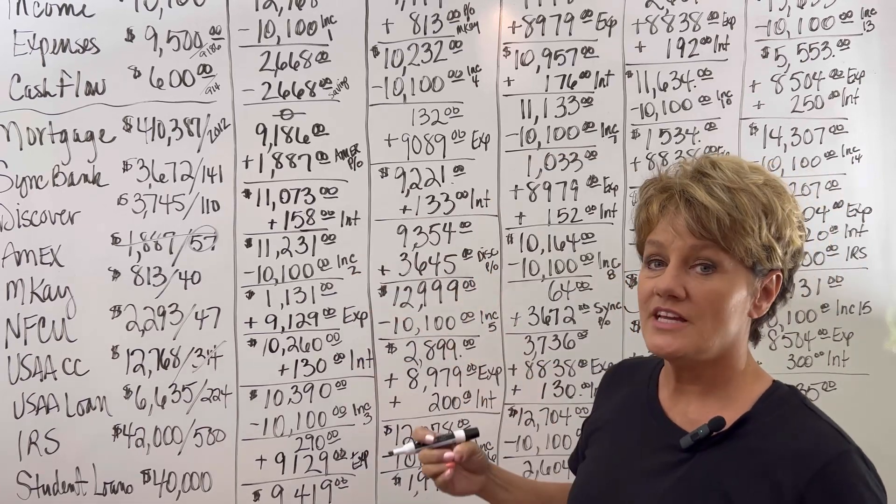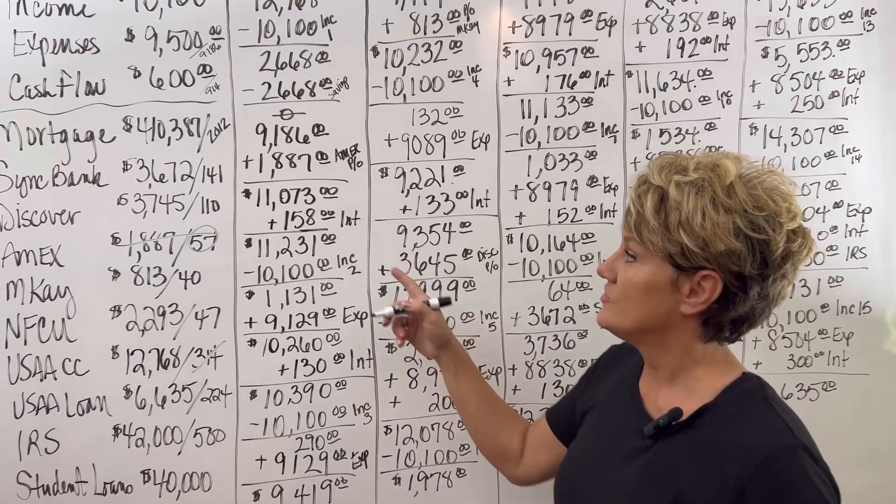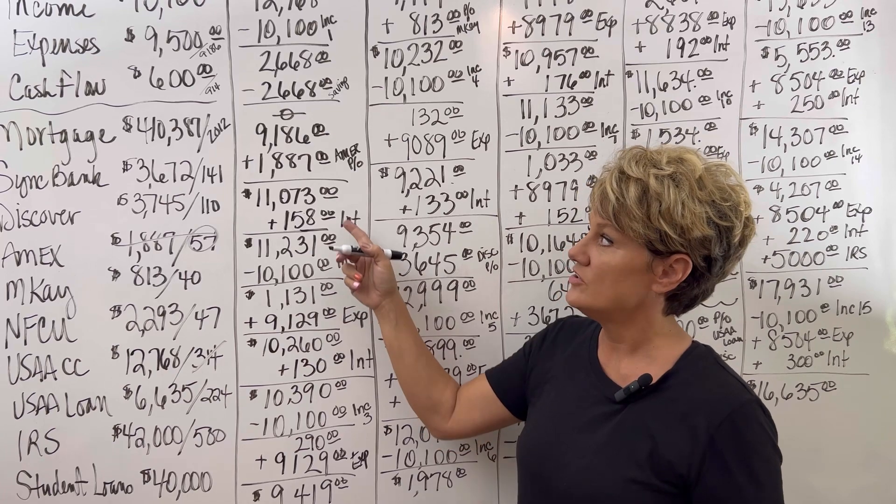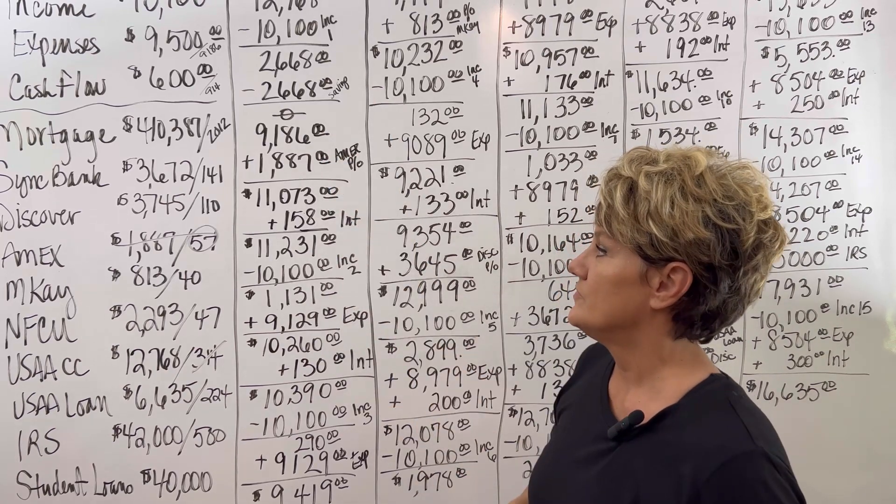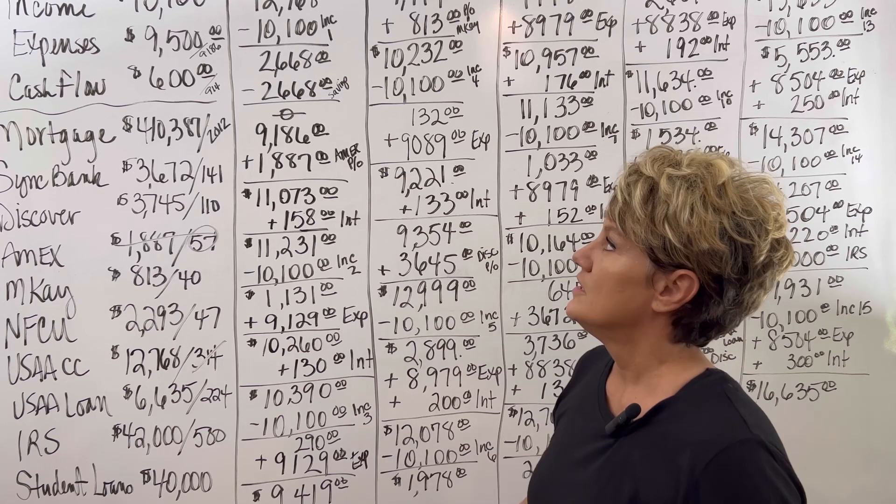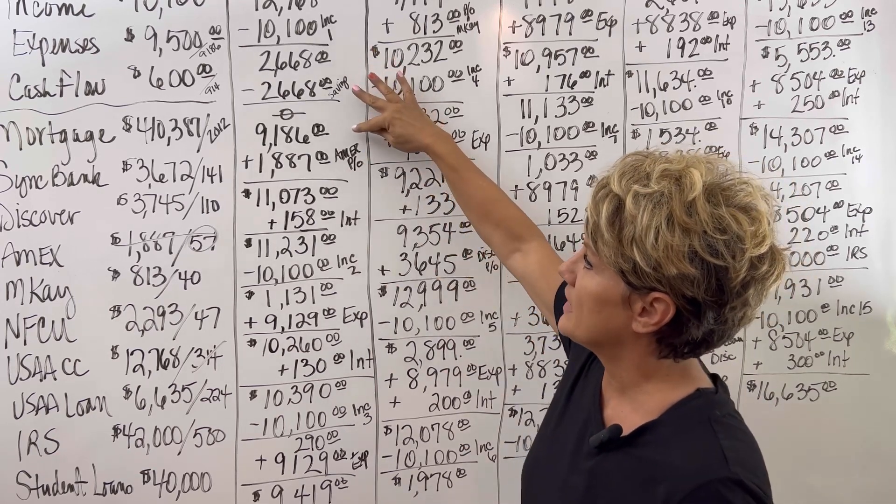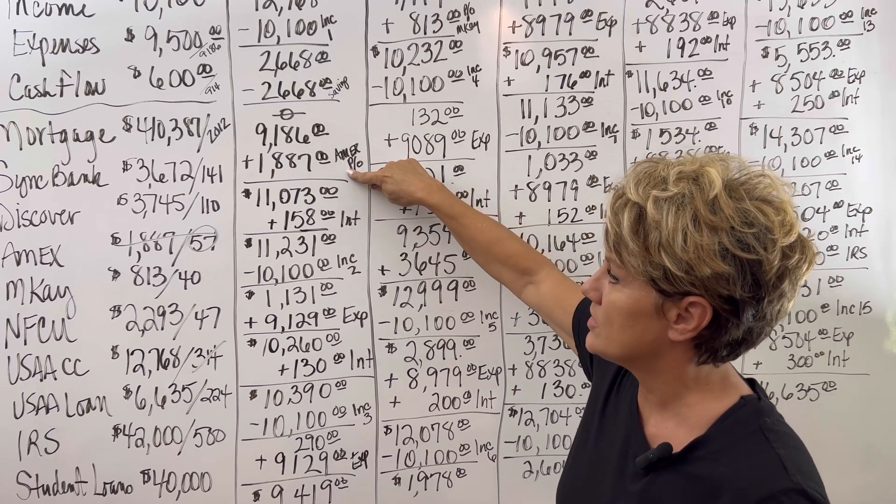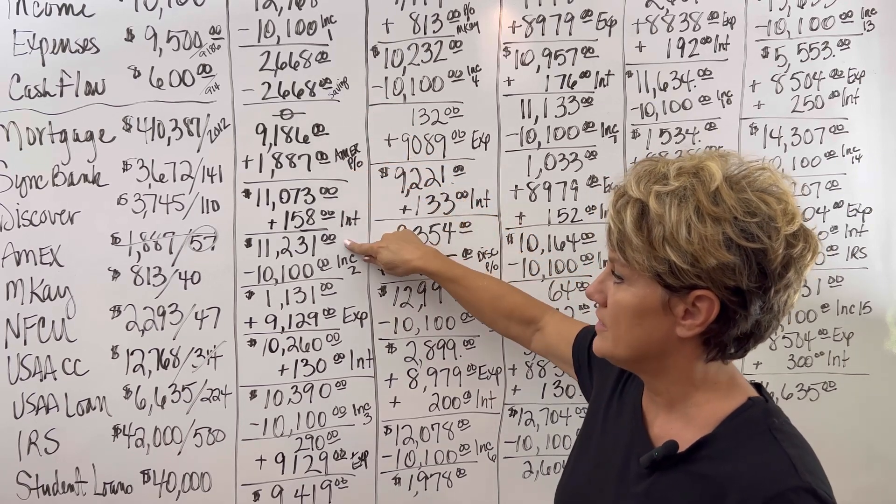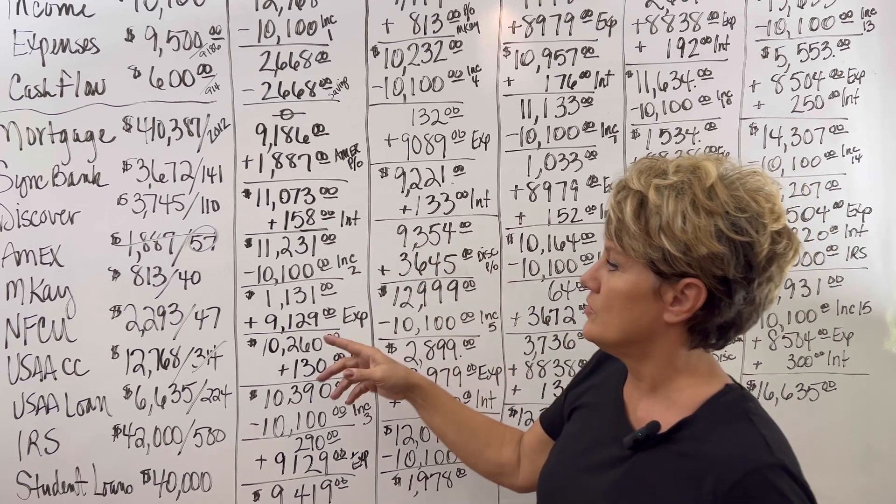The interest is at 30% on this card. So I have charged the interest based on the highs and the lows averaged out, which would be at $158 for the first month. So when we add the expenses back in, which is $9,186 in the American Express card, the interest, our balance is at $11,231.